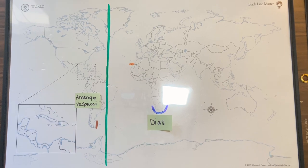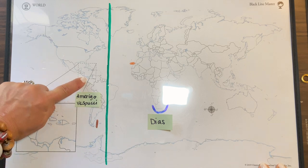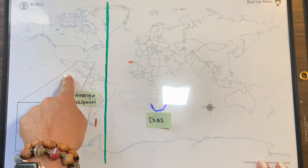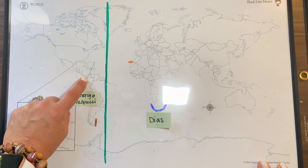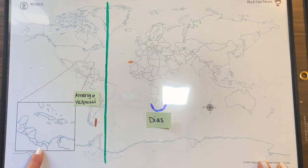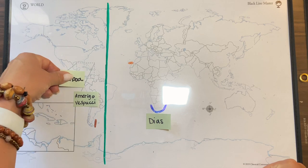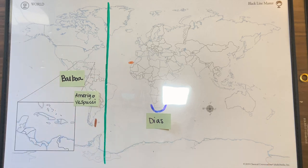Next we have Balboa. In our song we say 'Balboa crossed Central America to the Pacific.' There's no waterway through Central America, so he didn't sail — he had to cross on land. He crossed through Panama, that narrow strip, and from there he saw the Pacific Ocean. I'll put Balboa right there on the map so students remember he crossed Central America to reach the Pacific.